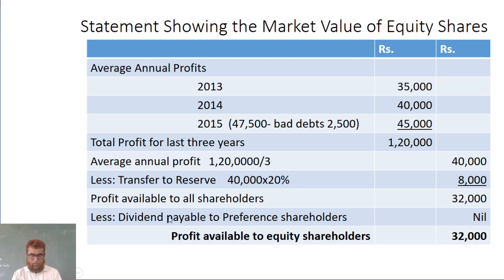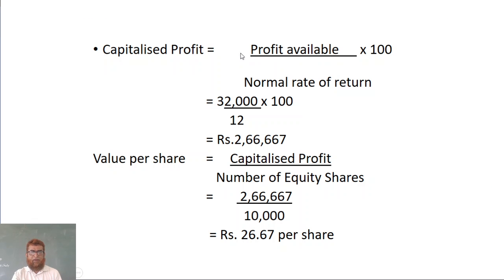Since preference dividend is nil, profit available to equity shareholders is also 32,000. Capitalized profit equals profit available divided by normal rate of return: 32,000 divided by 12% into 100, giving capitalized profit of 2,66,667. Yield value per share is 2,66,667 divided by 10,000 equity shares, which equals rupees 26.67 per share.